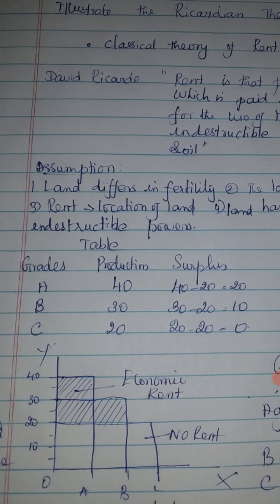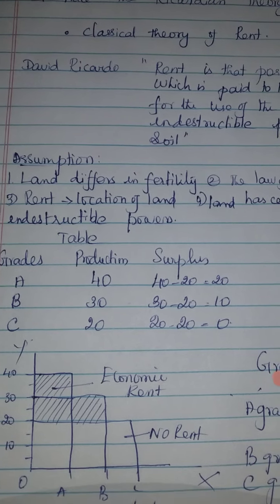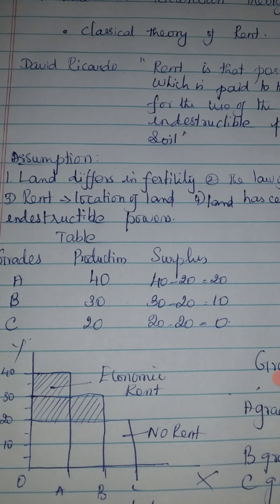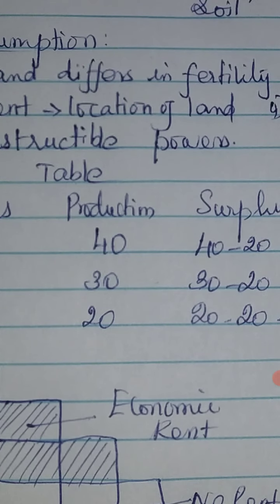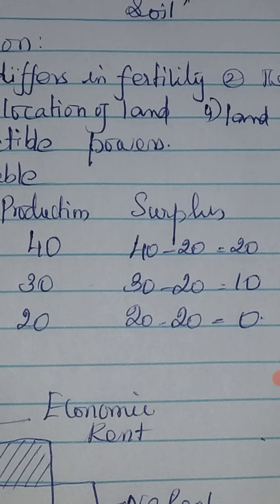This is a table showing A-grade land, B-grade land, and C-grade land. First, take A-grade land: if there is 20 stress of land, we can get 20 bags of produce.